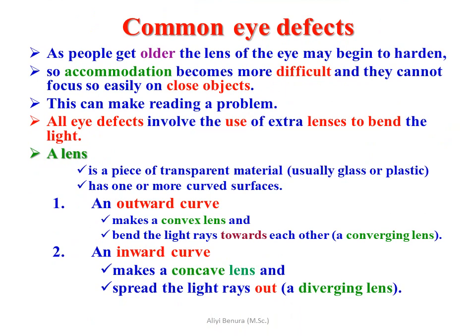As people get older, the lens of the eye may begin to harden, so accommodation becomes more difficult and they cannot focus easily on close objects, making reading a problem. All eye defects involve the use of extra lenses to bend light. A lens is a piece of transparent material, usually glass or plastic, with one or more curved surfaces. An outward curve makes a convex lens and bends light rays toward each other — a converging lens. An inward curve makes a concave lens and spreads light rays out — a diverging lens.